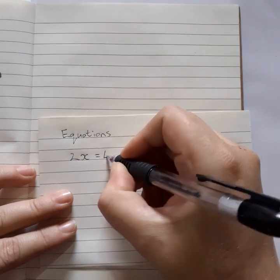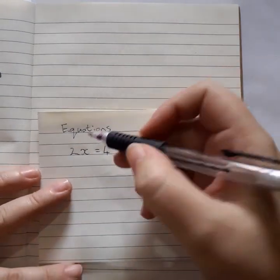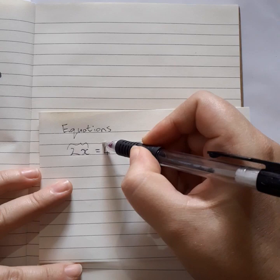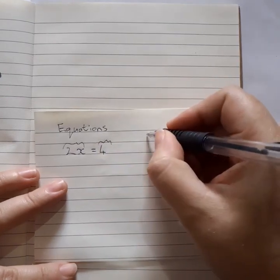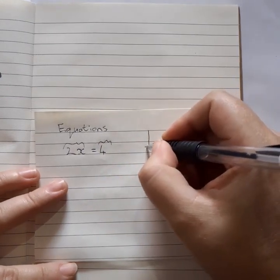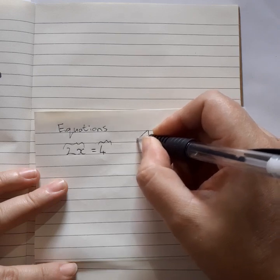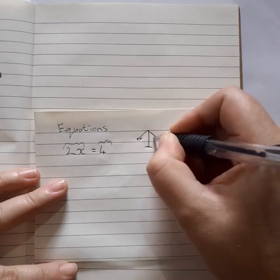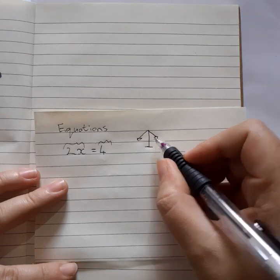2x equals 4. If this side is equal to this side, think about it like scales. Like if you've got a scale, how does one draw a scale?